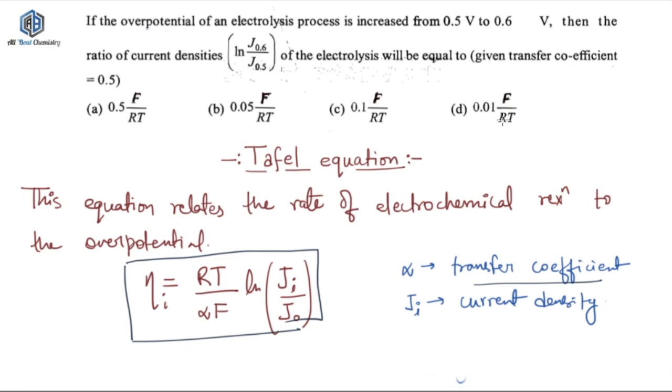So I hope now it is clear to you that what is overpotential and what is Tafel equation. Tafel equation is nothing but just the equation which relates the rate of electrochemical reaction to the overpotential. So let's use this particular equation to solve this question further.